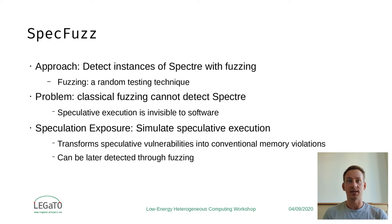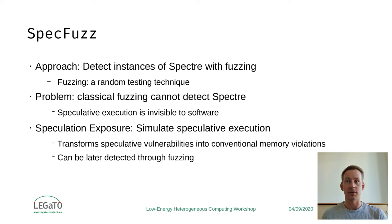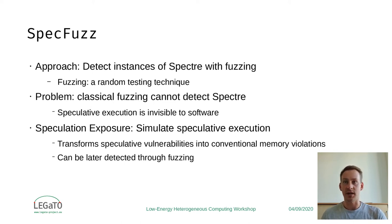Fuzzing is a technique where we feed the application under test randomized inputs until we trigger an error. And correspondingly, we will patch only those cases where we detect a vulnerability.